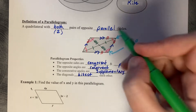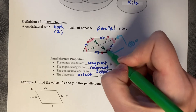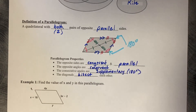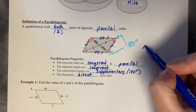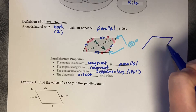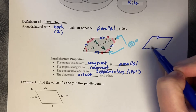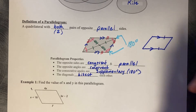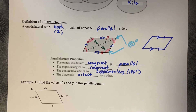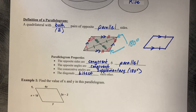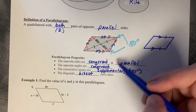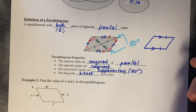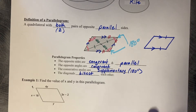Those lengths: this length is congruent to this length, and this length is congruent to this length. One more thing: you only need one set of sides to be parallel and congruent for it to be a parallelogram, as long as it's on the same side. If it has any of these other features, it's also a parallelogram.